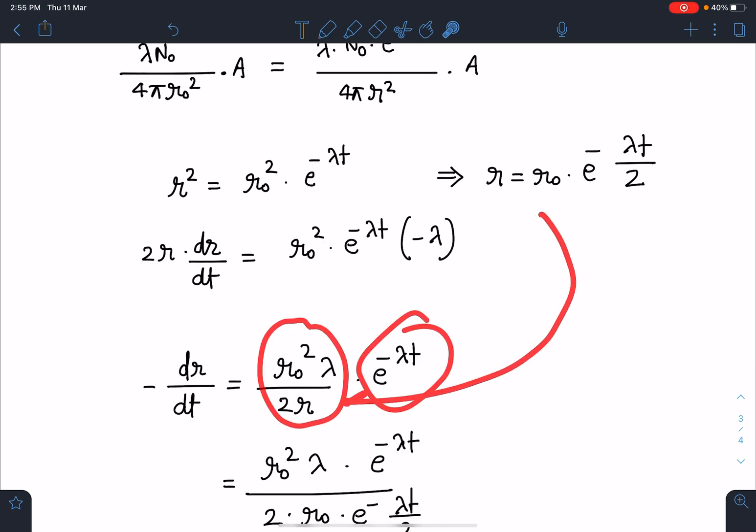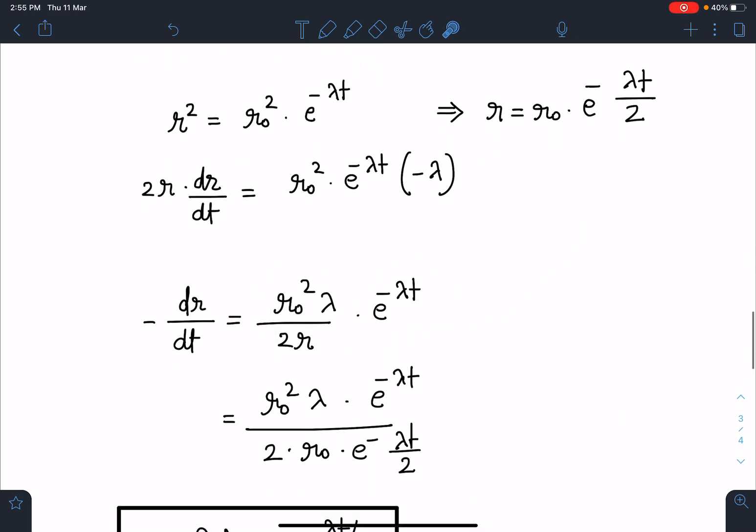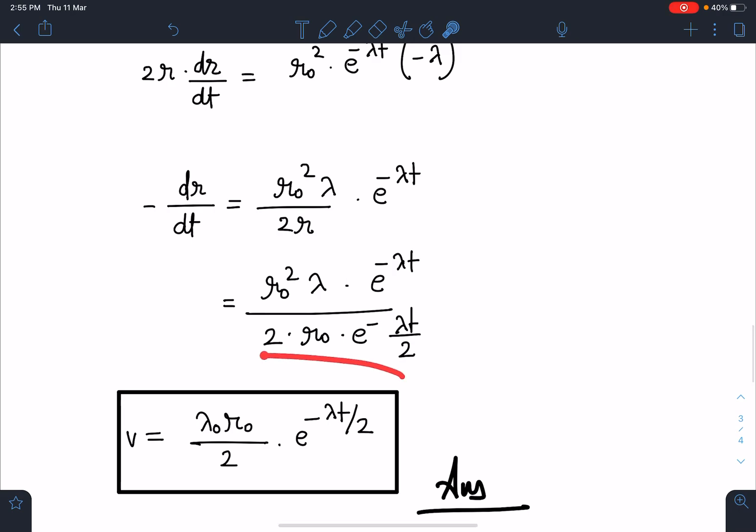Now I can substitute this value of R as a function of time T and if I simplify I am going to get this velocity V which is lambda naught r naught by 2 e to the power minus lambda T by 2. This is going to be the final answer for this problem.